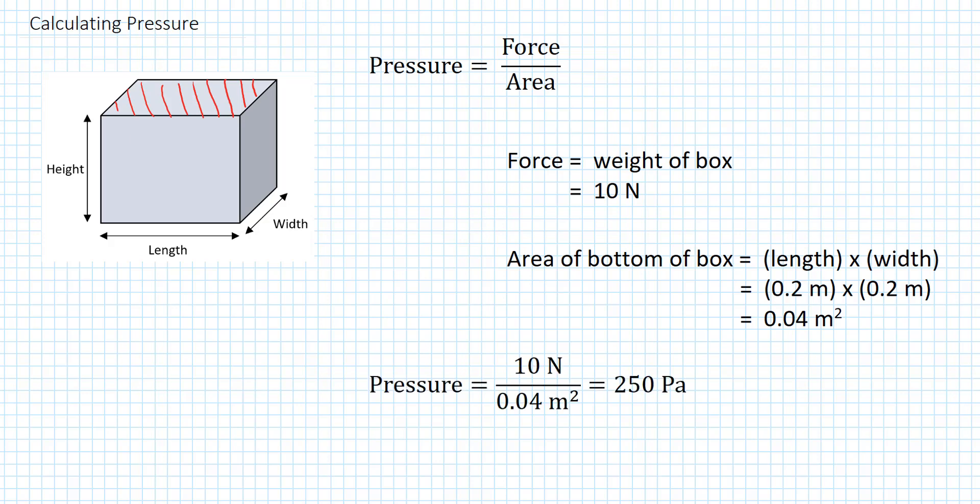So we put the force and the area into our equation. 10 Newtons divided by 0.04 square meters is 250 Newtons per square meter.